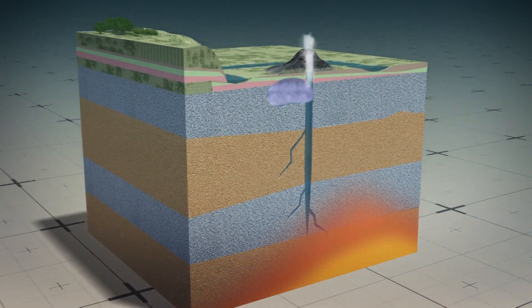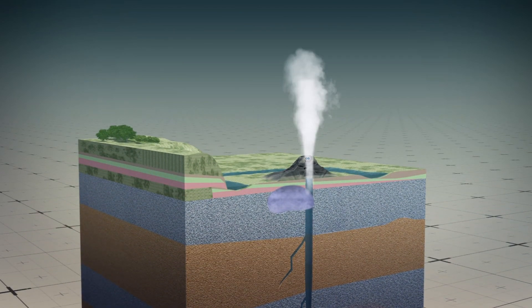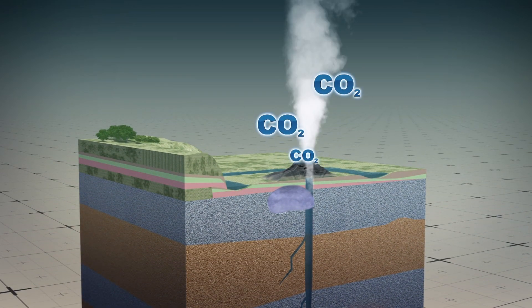Live Science reports earthquakes created deep fractures underground that allowed gases to move to the Earth's surface, creating boiling mud pools heated by carbon dioxide.